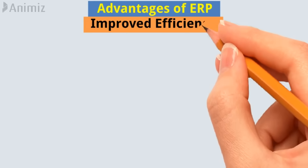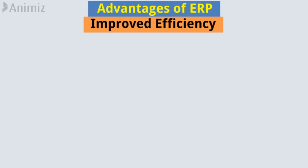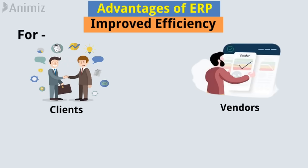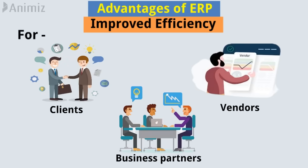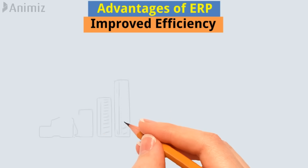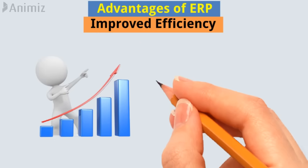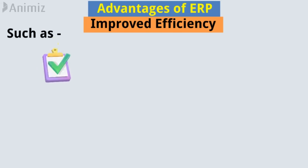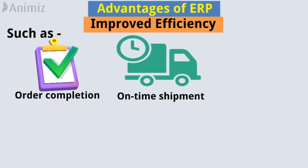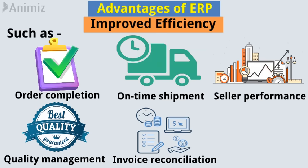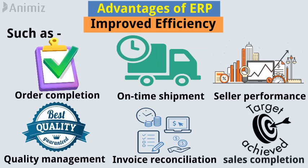Third, improved efficiency. ERP allows businesses to quickly access needed information for clients, vendors, and business partners. With improved planning, the ERP system delivers a huge increase in the efficiency of day-to-day and routine transactions, such as order completion, on-time shipment, seller performance, quality management, invoice reconciliation, and sales completion.